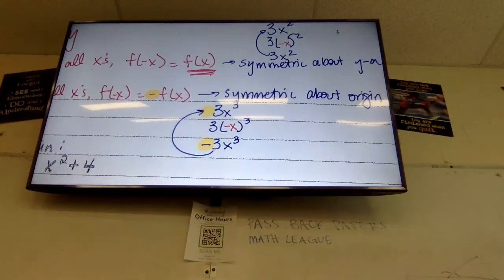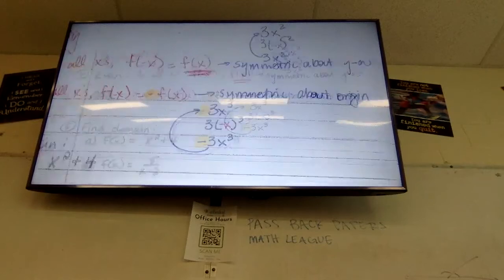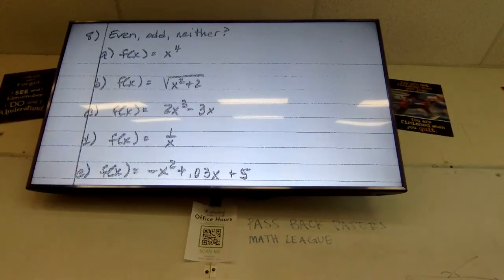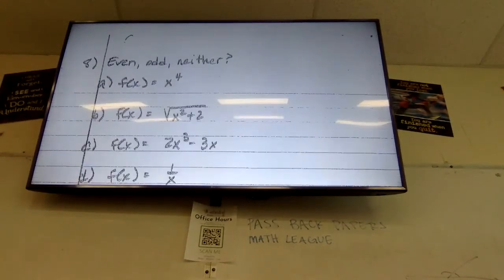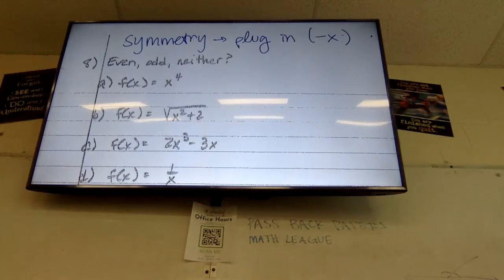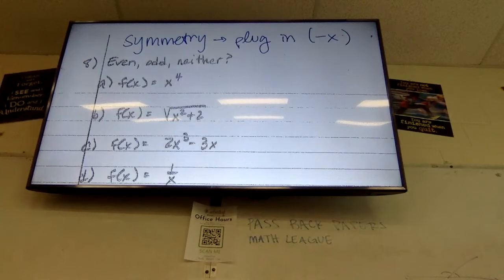Now let's actually do even/odd in practice — number 8 says even, odd, or neither. On all of these, I'm going to plug negative x in for every x and see: is it the same as what I started with, is it the exact opposite, or is it neither?